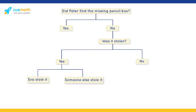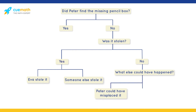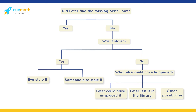If no one stole the pencil box, what else could have happened? Peter could have dropped it somewhere, left it in the library when he went there before class, lent it to someone, and so on. Even though there were many possibilities, Peter decided that Eva had stolen his pencil box based on Adam's unproven claim that Eva had stolen before.